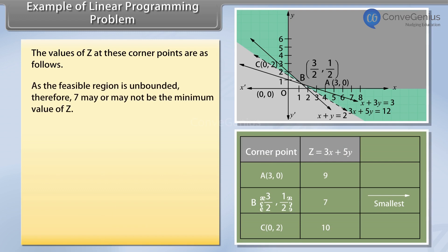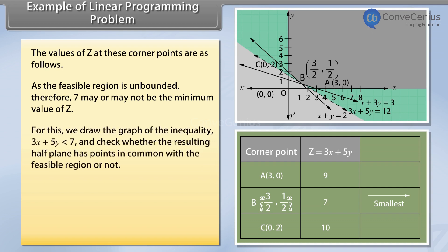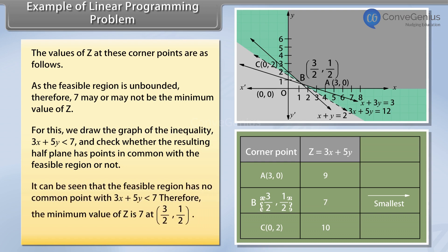As the feasible region is unbounded, therefore 7 may or may not be the minimum value of Z. For this, we draw the graph of the inequality 3X plus 5Y is less than 7, and check whether the resulting half plane has points in common with the feasible region or not. It can be seen that the feasible region has no common point with 3X plus 5Y less than 7. Therefore, the minimum value of Z is 7 at (3/2, 1/2).